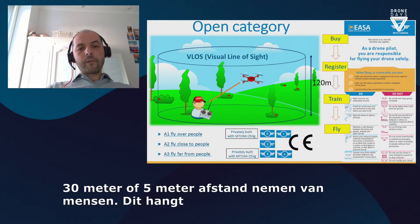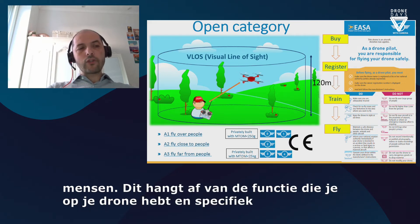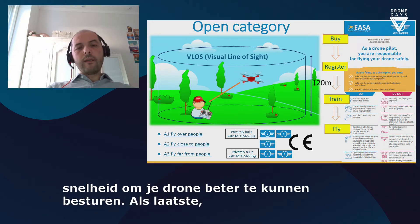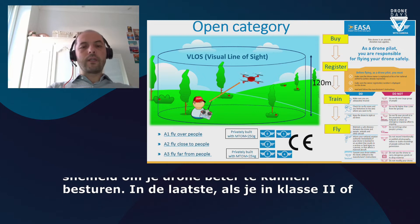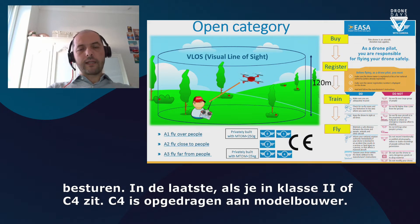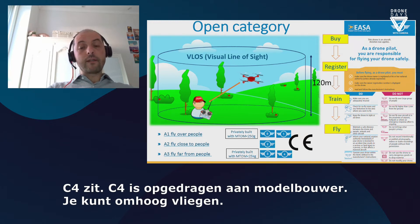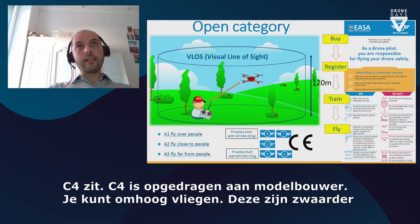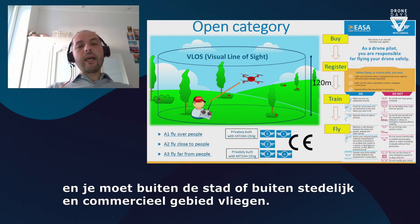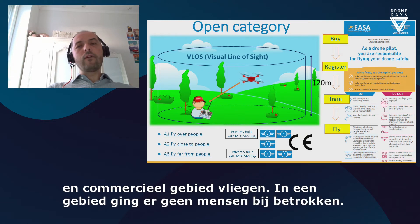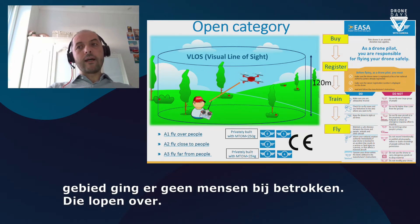For the larger drones up to 25 kilos, they will be class C3 or C4. The difference is that C4 is a class dedicated to model aircraft. You can also fly a privately built drone up to 25 kilos in this class. Since these are heavier drones, you need to always fly outside the city — at least 150 meters from urban, residential, industrial, and commercial areas — and in an area where there are no uninvolved people being overflown.